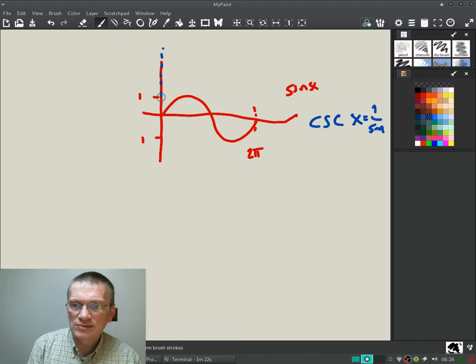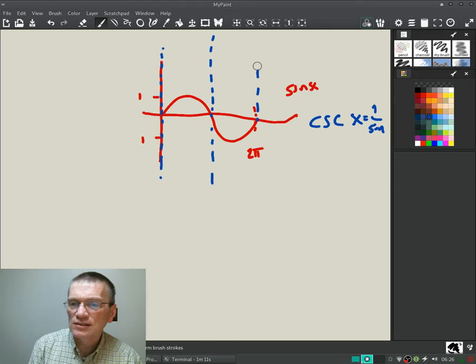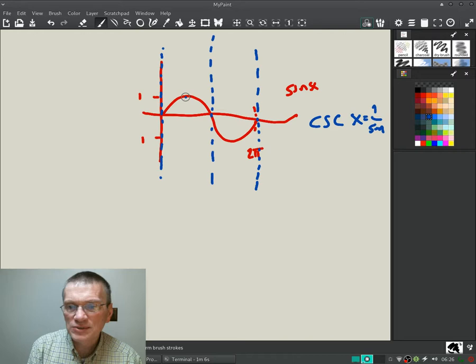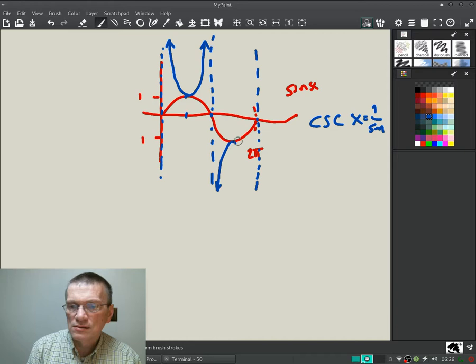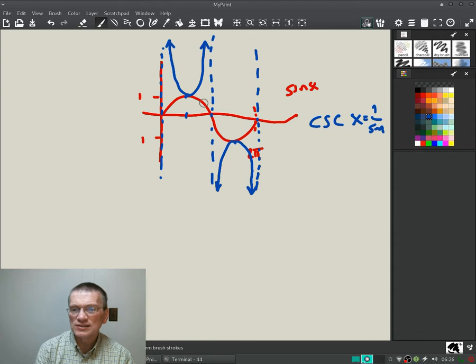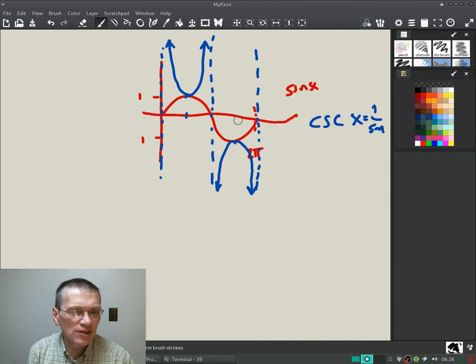So cosecant of x is one over sine of x. So interesting: where sine is zero, cosecant is infinity. So there's an asymptote here, or minus infinity. Where sine is one, one over one is also one. So the neat thing about cosecant is it comes down and touches sine at π over 2. So it looks like this. Its smallest value is one, and then it goes off to infinity and minus infinity in pairs. All right, kind of neat. I don't expect you to draw this or remember it.